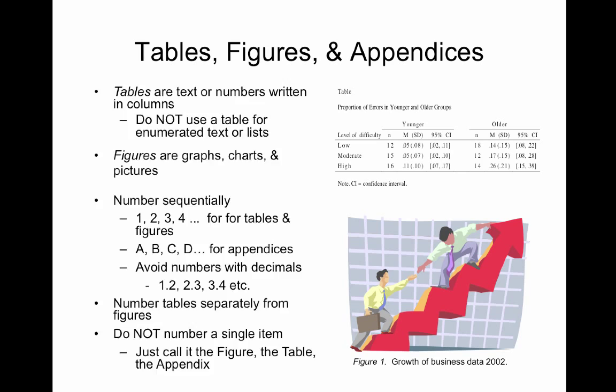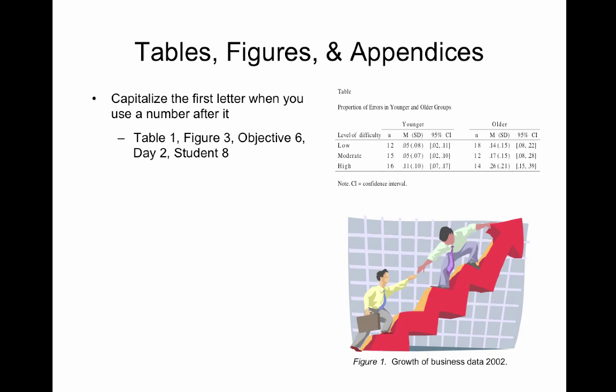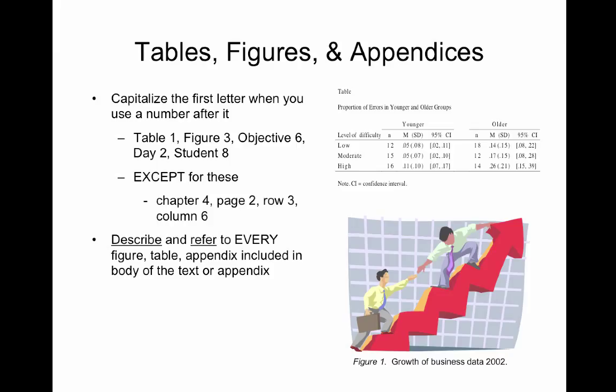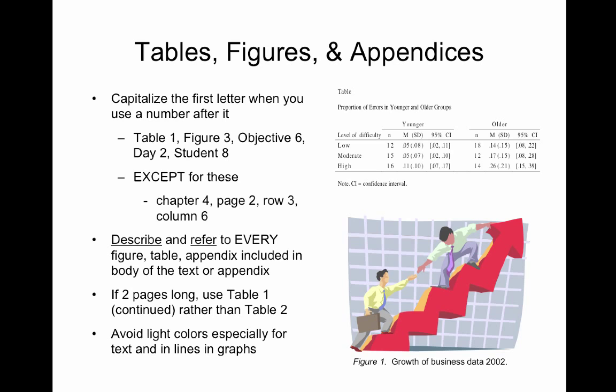Capitalize the first letter when you use a number after it, such as Table 1, Figure 3, Objective 6, Day 2, Student 8 — except for chapter, page, rows, and columns. Describe and refer to every figure, table, and appendix included in the body of the text or the appendix. If the table is two pages long, just use Table 1, Continued, rather than Table 2. Do the same with figures. Avoid light colors, especially for text and lines in graphs. Place figures, tables, and appendices in the order that they're referenced.